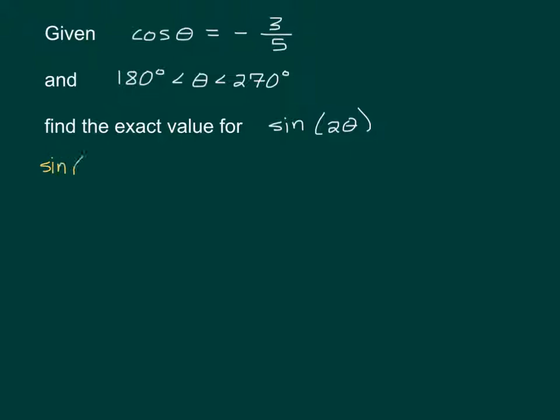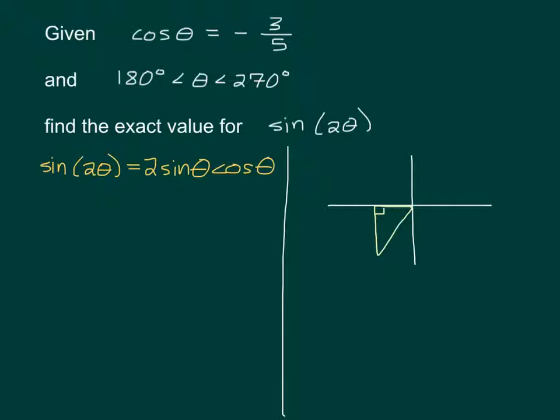They ask us for sine 2θ. Our formula for sine 2θ is 2 sine θ cosine θ. For this problem, to figure this out, we need to know sine and cosine. We are only given cosine. So, we need to figure out sine. That is when this comes into play. We are going to draw a triangle. If we know that the cosine is negative, that means that the x value of our point is negative, which means we could be anywhere in the second or the third quadrant. But, we are told this piece of information, meaning it is in the third quadrant. So, we know our triangle is going to be here. This is 3. This is 5. This we can think of as θ. What is the length of this missing side? 4.